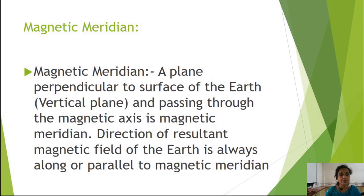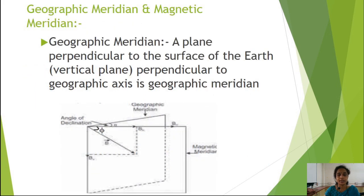The next parameter is the magnetic meridian. The magnetic meridian is defined as a plane perpendicular to the surface of the earth and passing through the magnetic axis. The direction of the resultant magnetic field of the earth is always along or parallel to the magnetic meridian. In the diagram, this plane perpendicular to the surface of the earth and to the magnetic axis is the magnetic meridian.